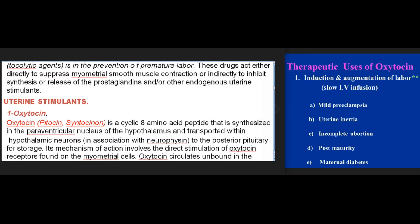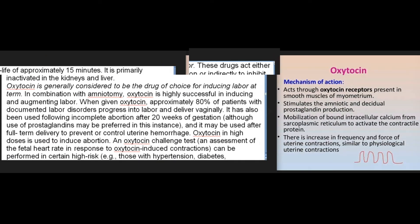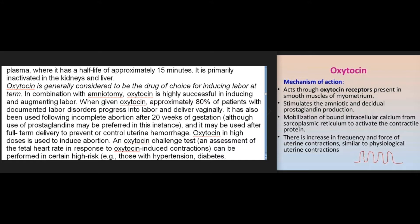Uterine stimulant #1: Oxytocin (Pitocin). Oxytocin is a cyclic amino acid peptide synthesized in the paraventricular nucleus of the hypothalamus and transported within hypothalamic neurons in association with neurophysin to the posterior pituitary for storage. Its mechanism of action involves direct stimulation of oxytocin receptors found on myometrial cells. Oxytocin circulates unbound in the plasma where it has a half-life of approximately 15 minutes, and is primarily inactivated in the kidneys and liver. Oxytocin is generally considered the drug of choice for inducing labor at term.